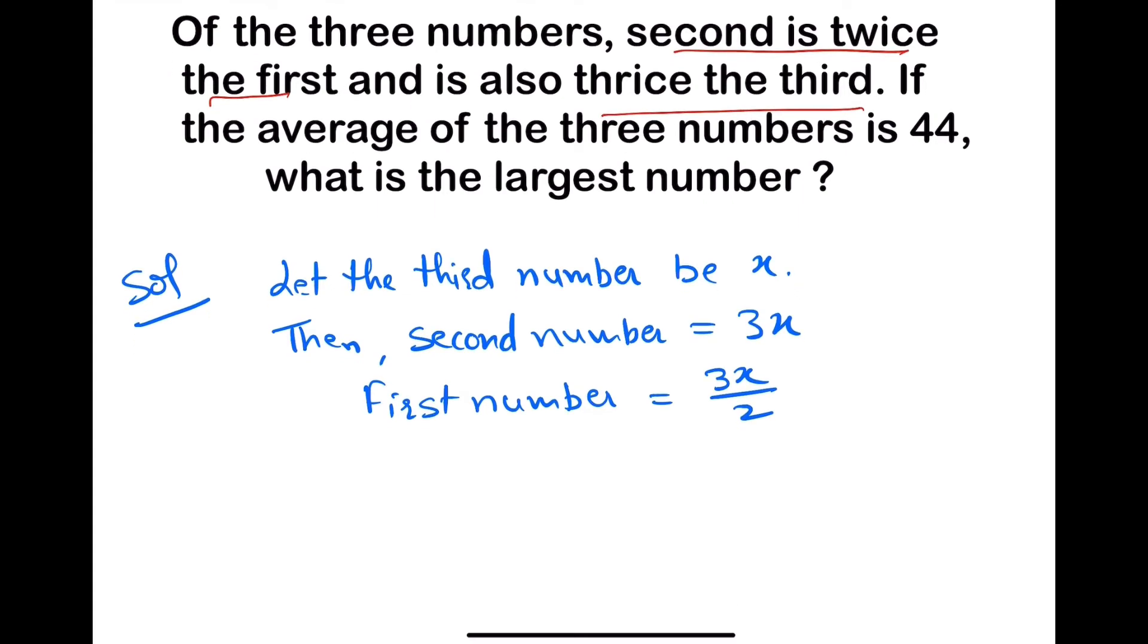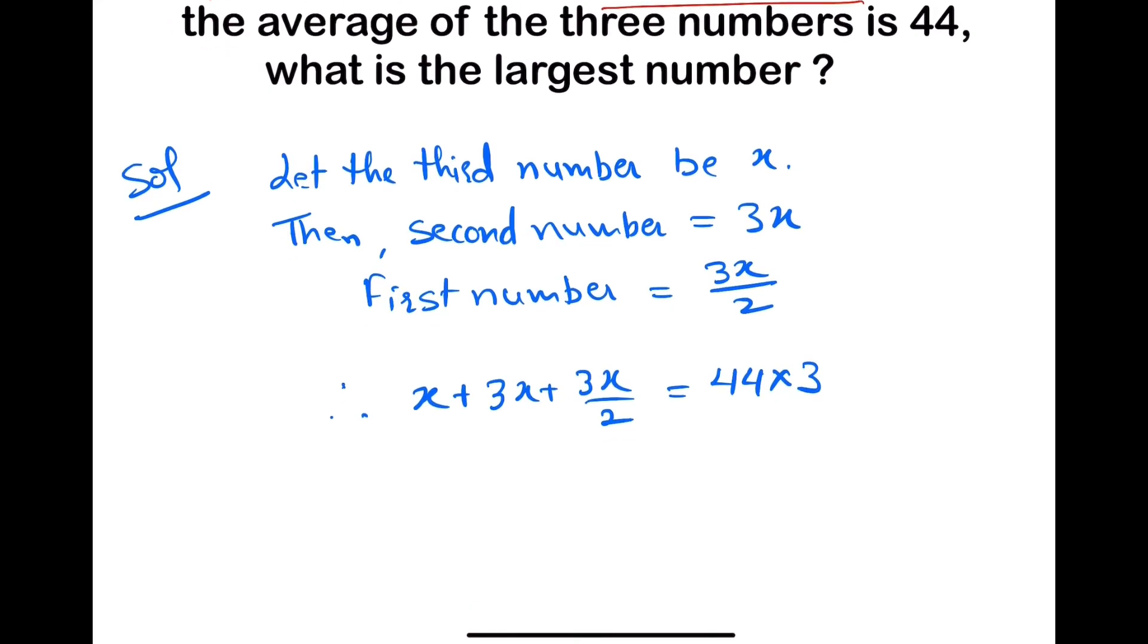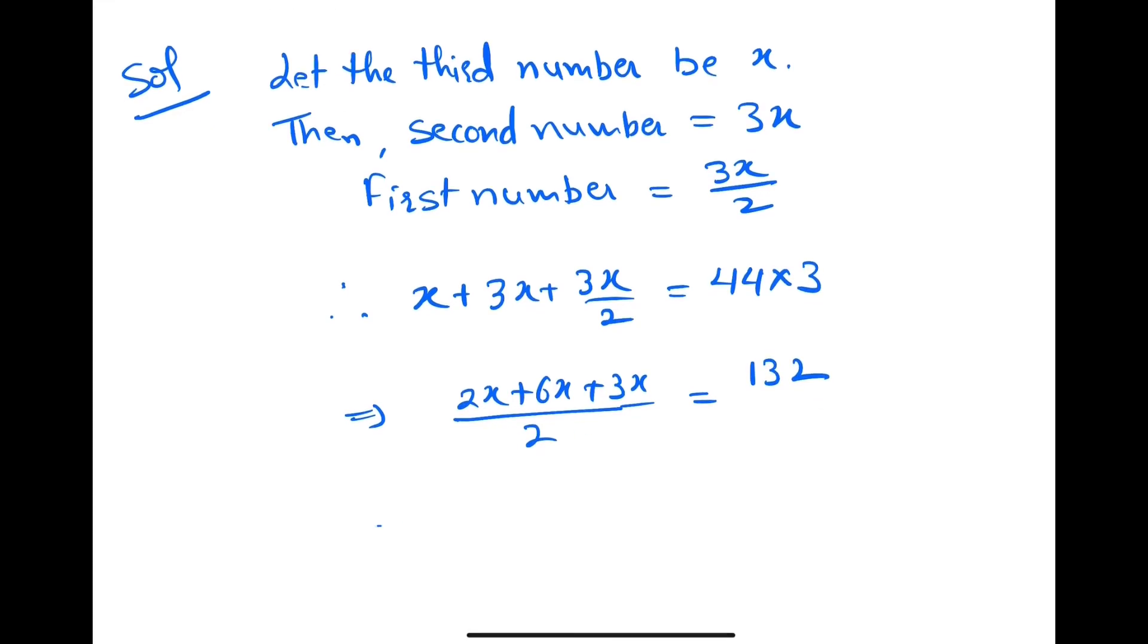So therefore x plus 3x plus 3x upon 2 equals 44 times 3. This implies, 2 is LCM, so 2x plus 6x plus 3x equals 132. This implies 11x upon 2 equals 132.